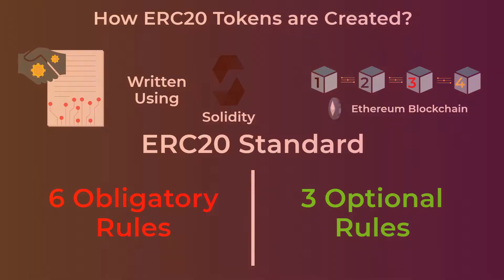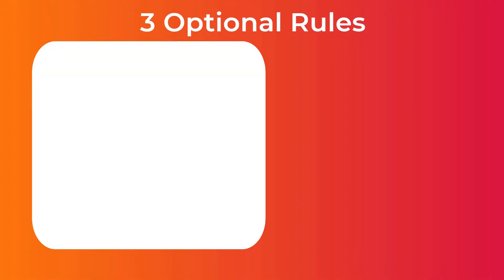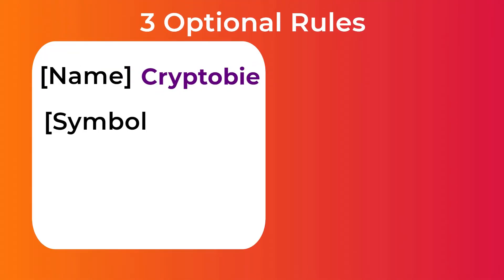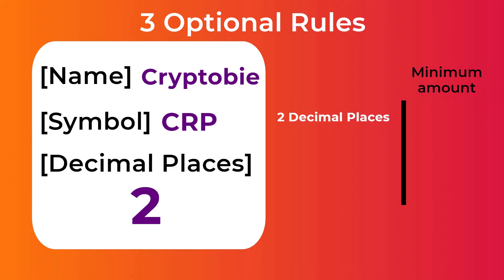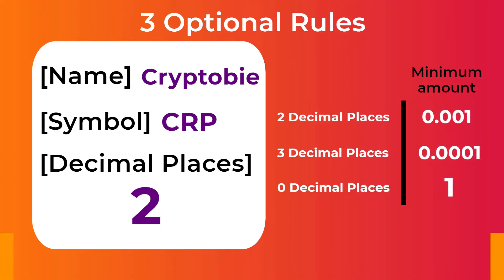To follow the three optional rules, you state the name of your token, its symbol, and how small you want your token to be divided. You can, for example, set the decimal places to 2, which makes 0.01 the minimum amount of your token, or you can set it to 0 and make one token the minimum amount.